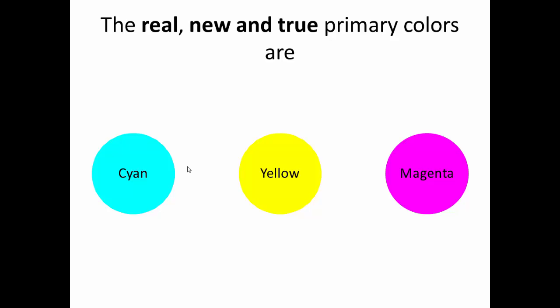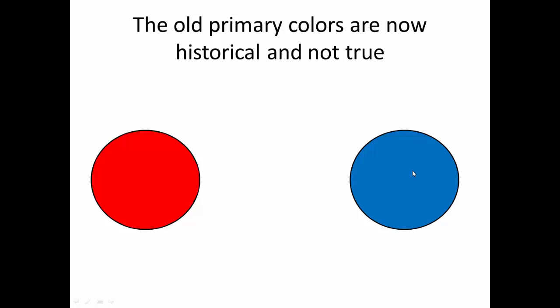The real, new and true primary colors are cyan, yellow and magenta. The old primary colors are now historical and not true primary colors.